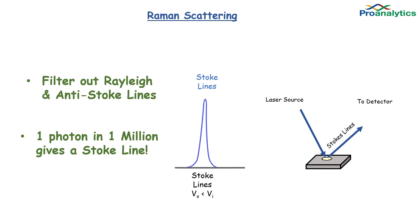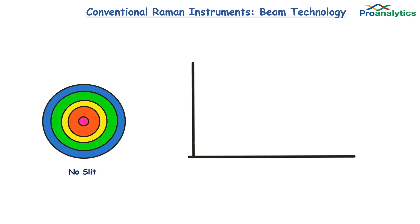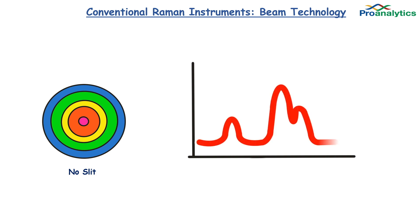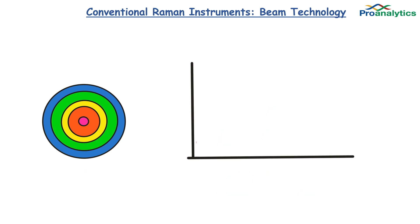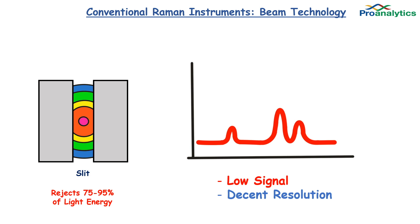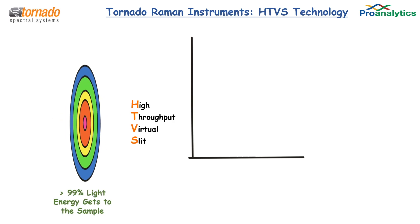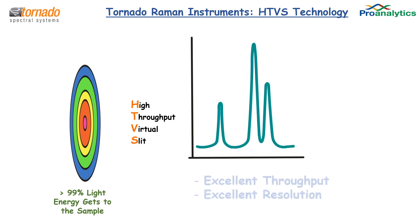Let's look at what makes Tornado Raman different from their competitors. Traditional Raman instruments use unfiltered lasers — more of a shotgun effect where light is scattered over the sample. You get a high signal, but the resolution is extremely poor. Some instruments focus the beam using slit technology, which blocks about 75–95% of the light energy, giving low signal but decent resolution. Tornado has created HTVS technology — High Throughput Virtual Slit — which anamorphically reshapes the beam so that 99% of the light energy hits the sample, providing excellent throughput and resolution. Only Tornado has the HTVS technology.